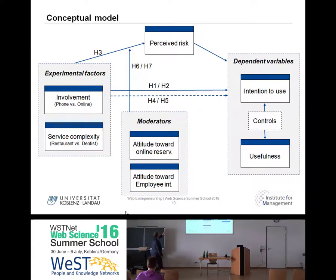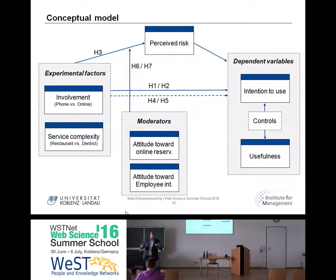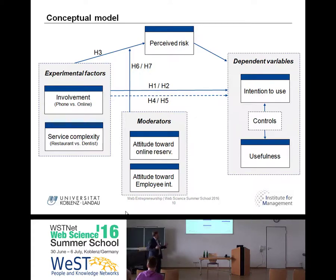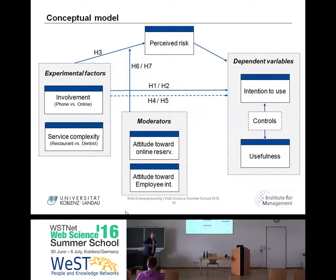Sometimes with phones you have to wait in queues, the restaurant is closed, you cannot call someone. We wanted to look at how the involvement of the booking process affects perceived risk and usefulness. This is a typical model how a management researcher would research something. We had our experimental factors and built four groups. It was a web-based survey where one scenario asked: 'Please imagine you are about to book a table in your favorite restaurant' — by phone or online.